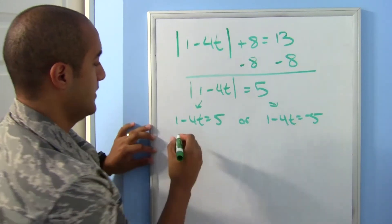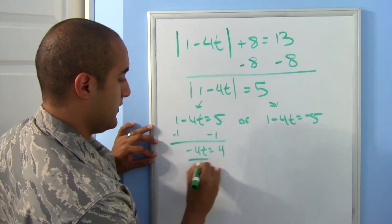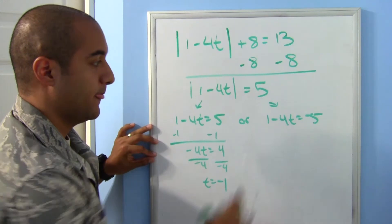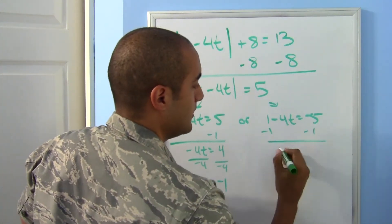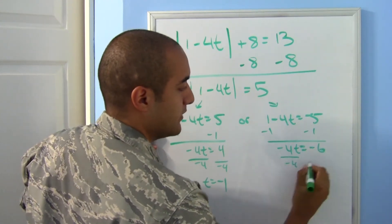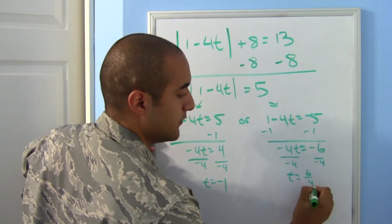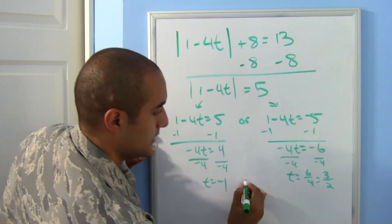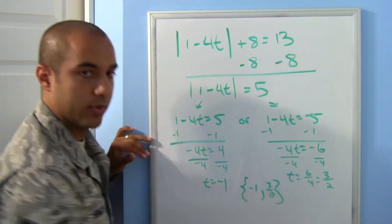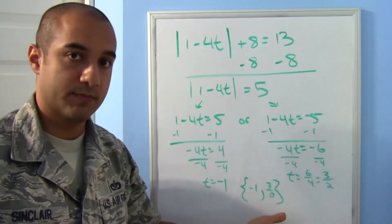Solving accordingly: subtract 1, then negative 4t equals 4, divide by negative 4, and t equals negative 1. On the other side, subtract 1 to get negative 6, then divide by negative 4. Dividing two negatives gives 6 over 4, which simplifies to 3 over 2. Our solution set is {negative 1, 3/2 (or 1.5)}. The main thing: get the absolute value alone first before doing your split.